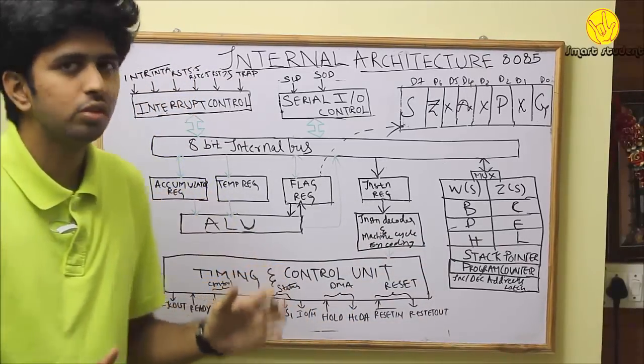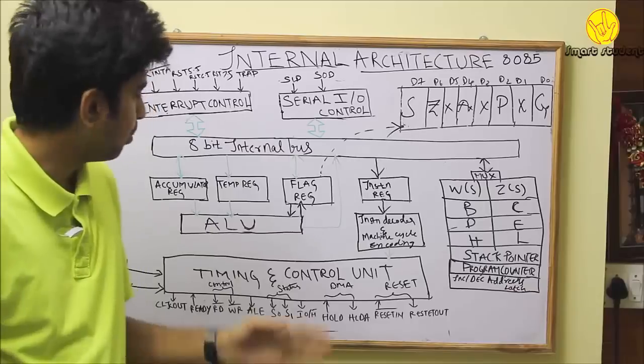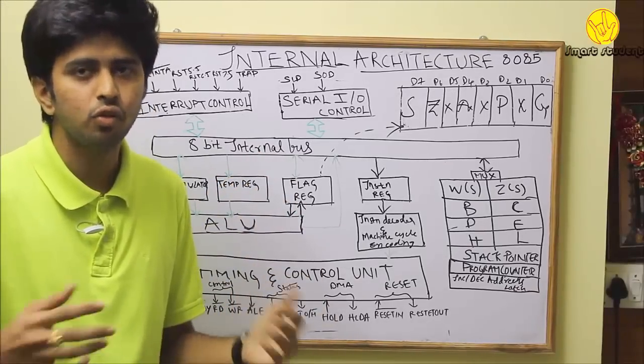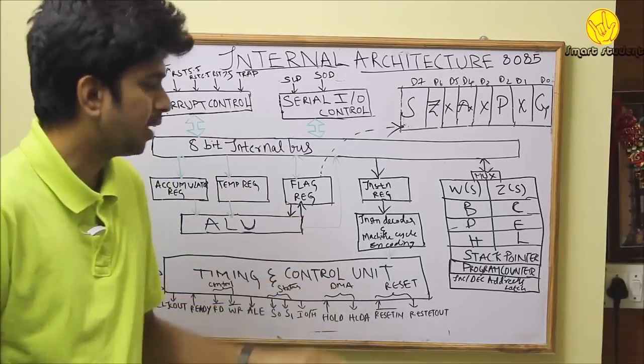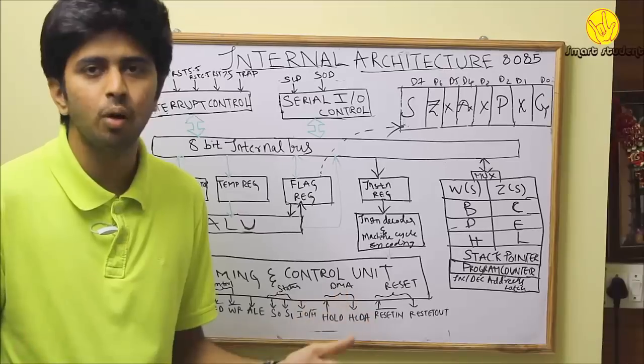Accumulator register is used to store the data temporarily. Temporary register is used to access one of the operands. Flag register tells about the status of the ALU operation.